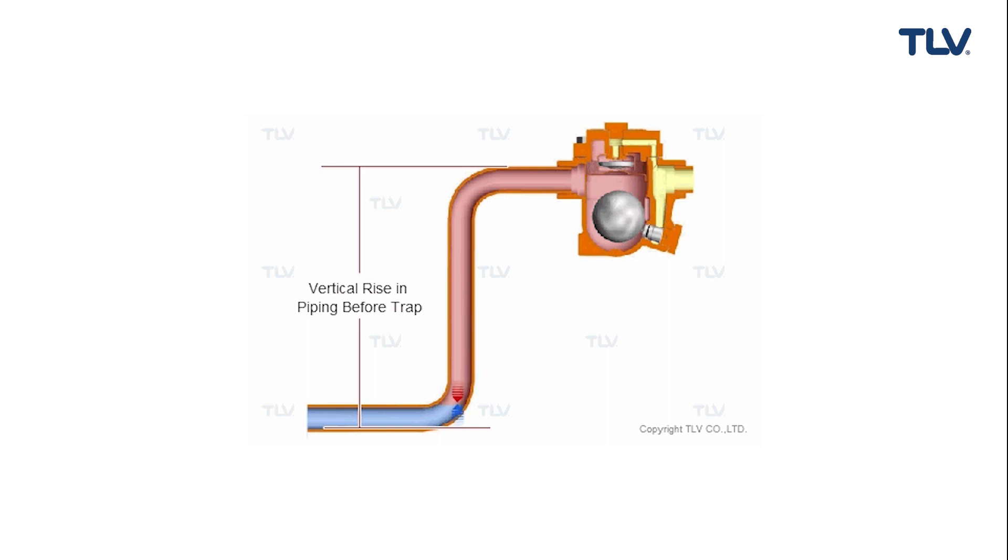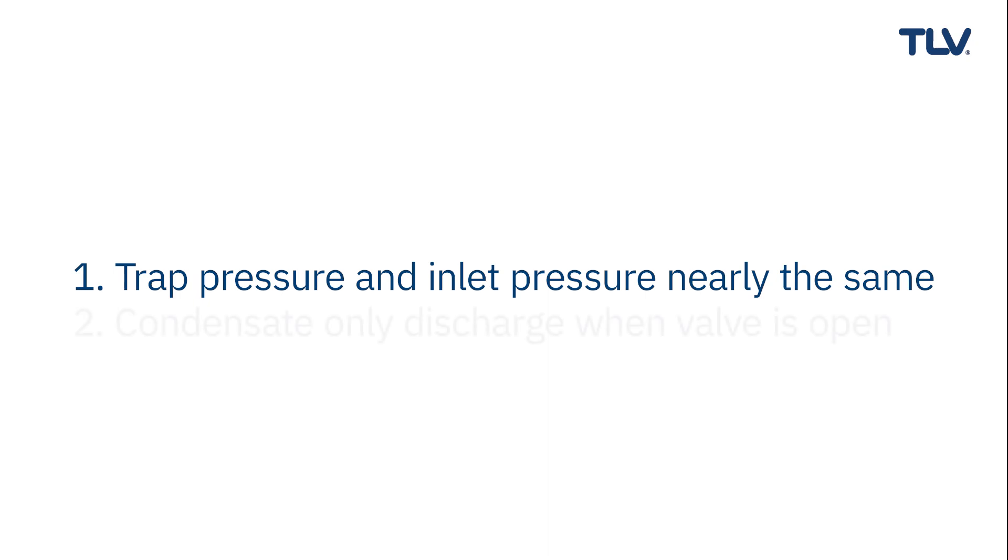You might not expect steam locking to occur if the hydraulic head pressure is large enough to overcome the steam locking. However, head pressure cannot resolve this type of problem because of two following points: the pressure within a trap and within inlet piping leading to the trap are virtually the same, or condensate is discharged only when the valve is open.